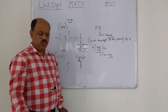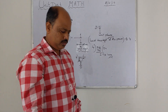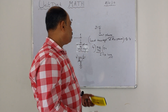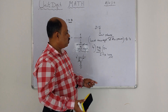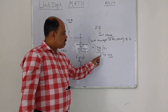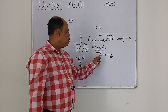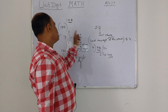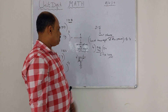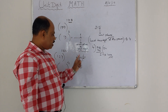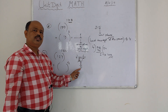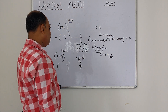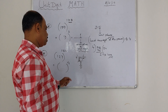Mind it from today: where there is no remainder, you have to always write four as the power. There are two rules only. If there is a remainder, write that remainder as the power. Or, if there is no remainder, always write four as the power.